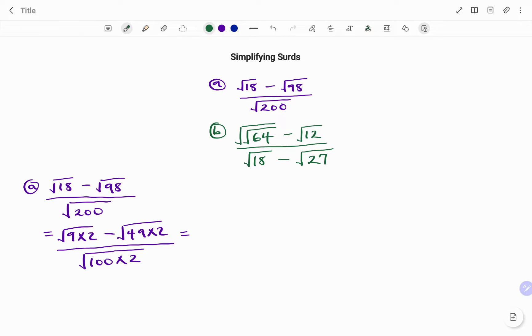Now, the laws of the surd rule state that if I have square roots of two numbers multiplying each other, it's the same as root of A times root of B. So I'm going to break down what I have for each root. That's equal to root of 9 times root of 2 minus root of 49 times root of 2 divided by square root of 100 times root 2.